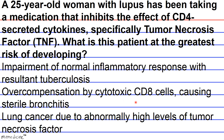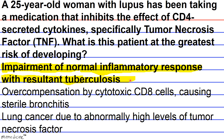The correct answer is A. Overcompensation by CD8 cells would not necessarily result from blocking CD4-synthesized cytokines. TNF levels would be lower, not higher, and abnormally high TNF would actually result in a lower likelihood of developing cancer. By blocking CD4 cytokines, you block some immune functions of CD4 cells, putting the patient at risk for infection — explicitly stated in the passage, approximately the second-to-last sentence of paragraph 4. One such infection is tuberculosis.